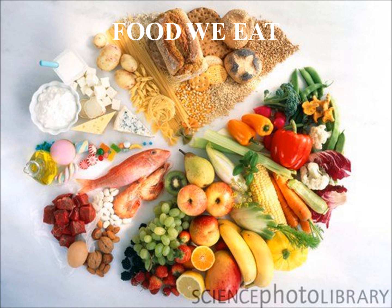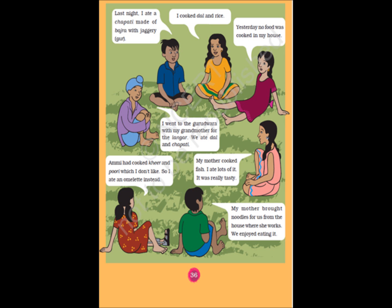Children, did all the children in your class eat the same food items yesterday? Here, some of the children are discussing about the food items they ate yesterday. One boy said he ate chapati made of bajra. A girl said she cooked dal and rice. Another girl said no food was cooked in her home. One boy said he went to the Gurudwara with his grandfather for langar and they ate dal and chapati. One girl said her mother cooked kheer and puri which she didn't like, so she ate an omelette instead. Another girl said her mother cooked fish and she ate a lot of it — it was really very tasty. One more boy said his mother brought noodles from the house where she works, and they enjoyed a lot.